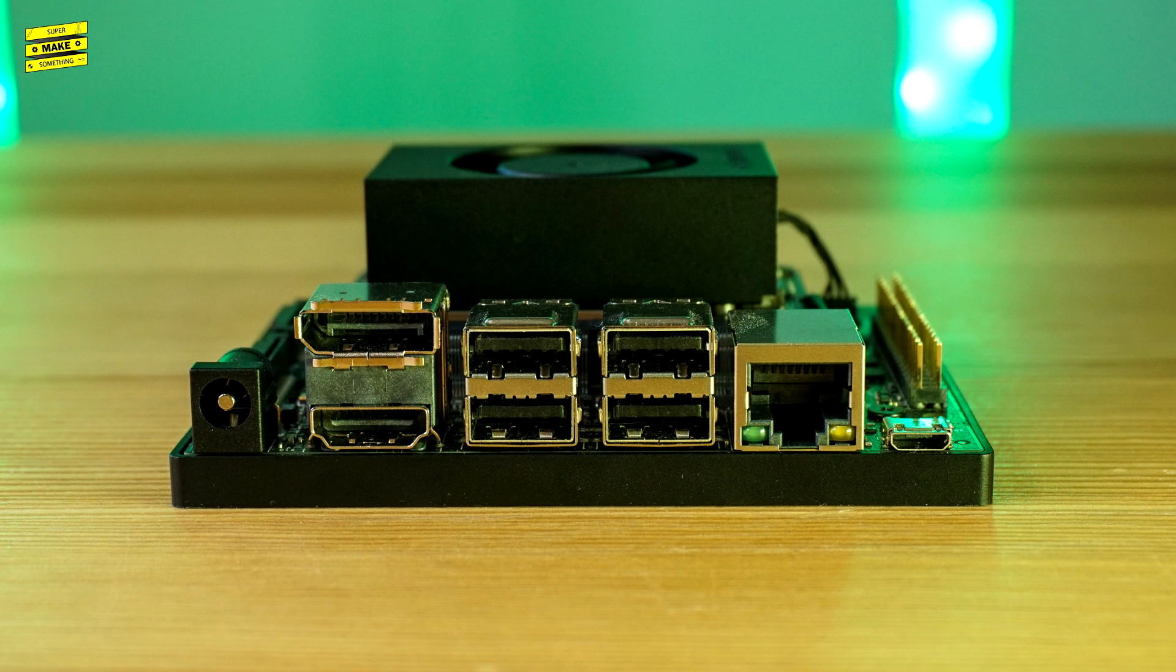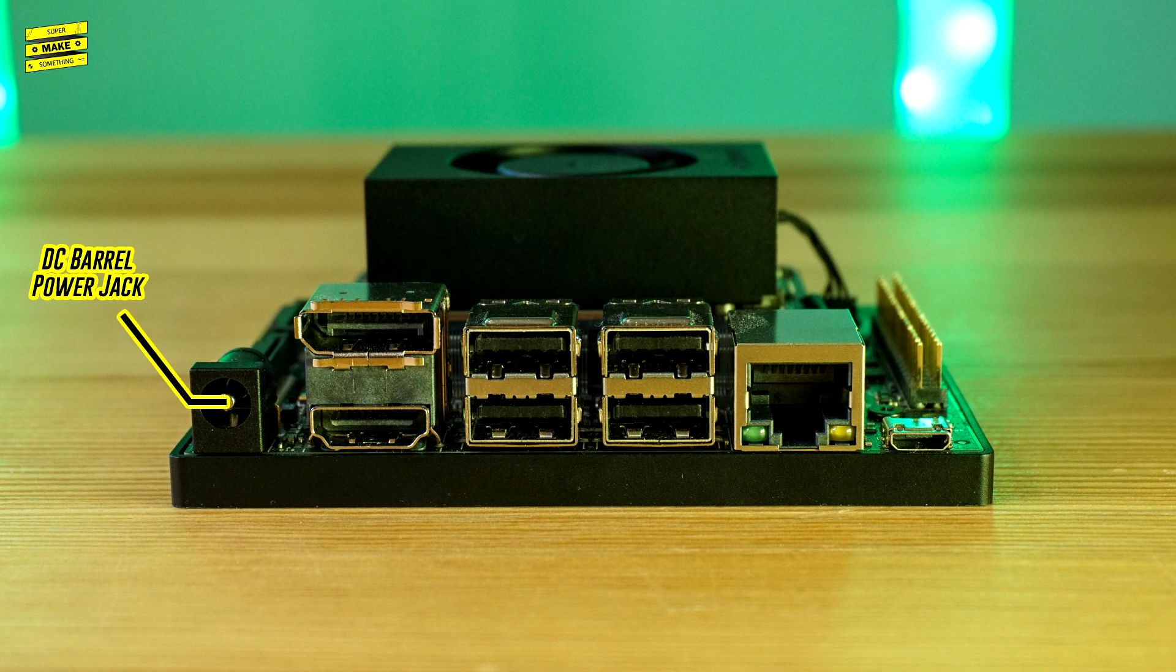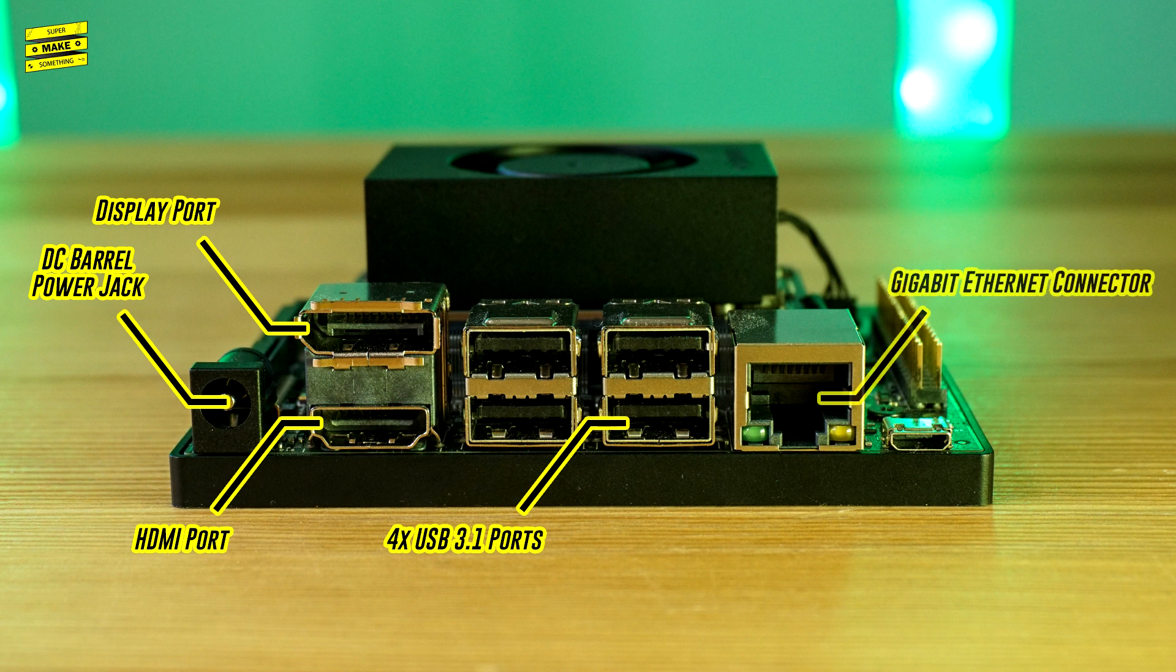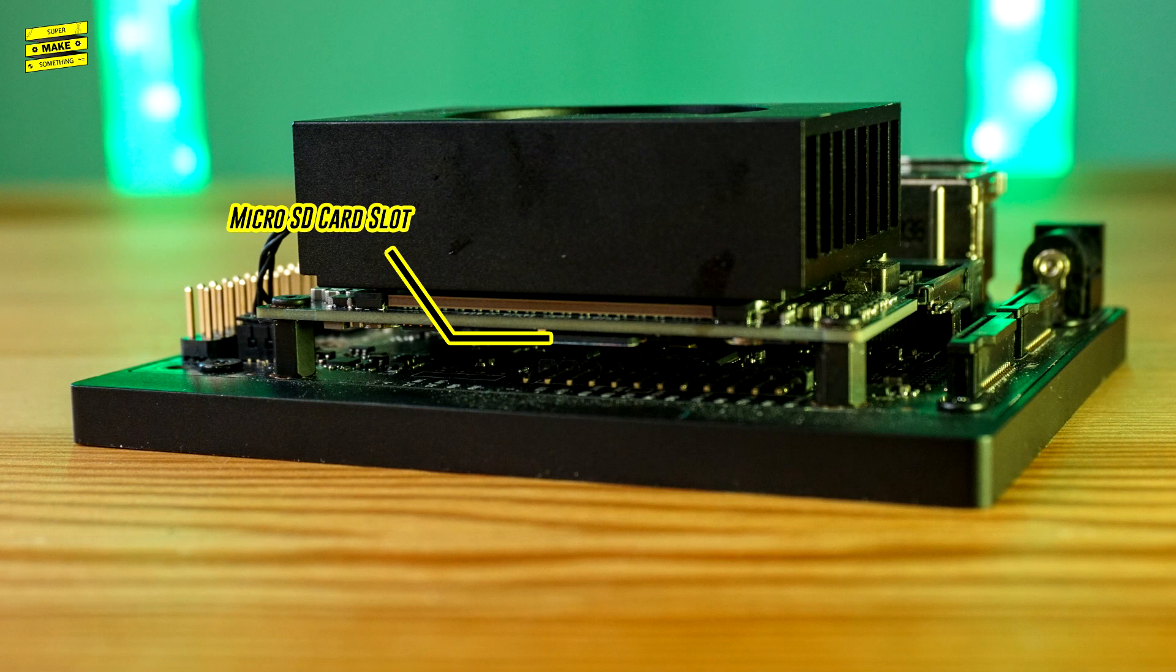The carrier board is handy for development and breaks out multiple ports and interfaces, including a DC barrel power jack, a display port and an HDMI port, four USB 3.1 ports, a gigabit ethernet connector, a micro USB connector, and a micro SD card slot.